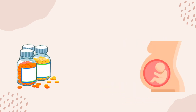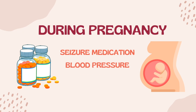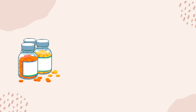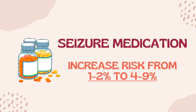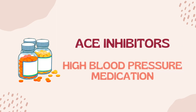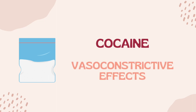There are also some other non-genetic causes of kidney dysplasia, such as the use of certain prescription or illegal drugs during pregnancy. Kidney dysplasia has been associated with the use of seizure medications, high blood pressure medications, and cocaine during pregnancy. The exact mechanism through which seizure medications induce renal dysplasia is currently unknown; however, the use of seizure medications during pregnancy can increase the risk of kidney dysplasia from one to two percent to four to nine percent. ACE inhibitors, which are high blood pressure medications, can also cause kidney dysplasia among other birth defects.